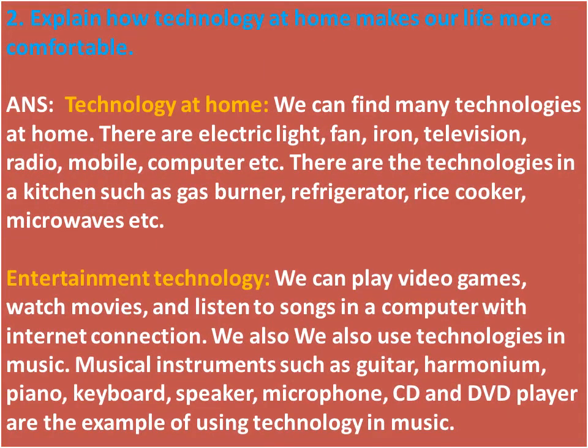Descriptive question number two: Explain how technology at home makes our life more comfortable. Answer: We can find many technologies at home — electric light, fan, iron, television, radio, mobile, and computer. In the kitchen there are technologies such as gas burner, refrigerator, rice cooker, and microwave.